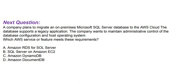A company plans to migrate an on-premises Microsoft SQL Server database to the AWS cloud. The database supports a legacy application. The company wants to maintain administrative control of the database configuration and host operating system. Which AWS service or feature meets these requirements? Option A: Amazon RDS for SQL Server. Option B: SQL Server on Amazon EC2. Option C: Amazon DynamoDB. Option D: Amazon DocumentDB.